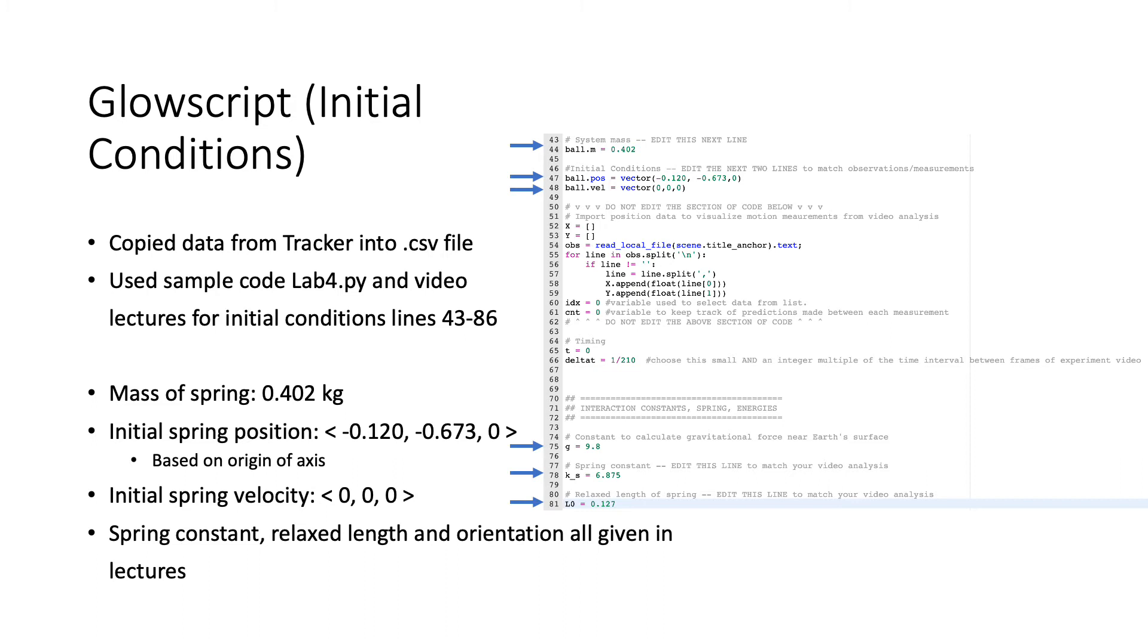We have the mass of the spring listed at 0.402 kilograms along with the position at the start of frame 5. We also have the initial spring velocity at 0, and the spring constant, relaxed length, and orientation. Lines 75, 78, and 81 were all given to us in the lectures, so we did not have to calculate those.